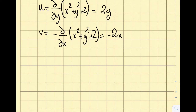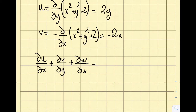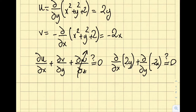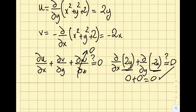The conservation of mass for incompressible flow is: ∂u/∂x + ∂v/∂y + ∂w/∂z = 0. Inserting u = 2y, v = −2x, and w = 0, we evaluate ∂(2y)/∂x + ∂(−2x)/∂y. The first term is zero because 2y is not a function of x, and the second term is zero because −2x is not a function of y. So zero plus zero equals zero.